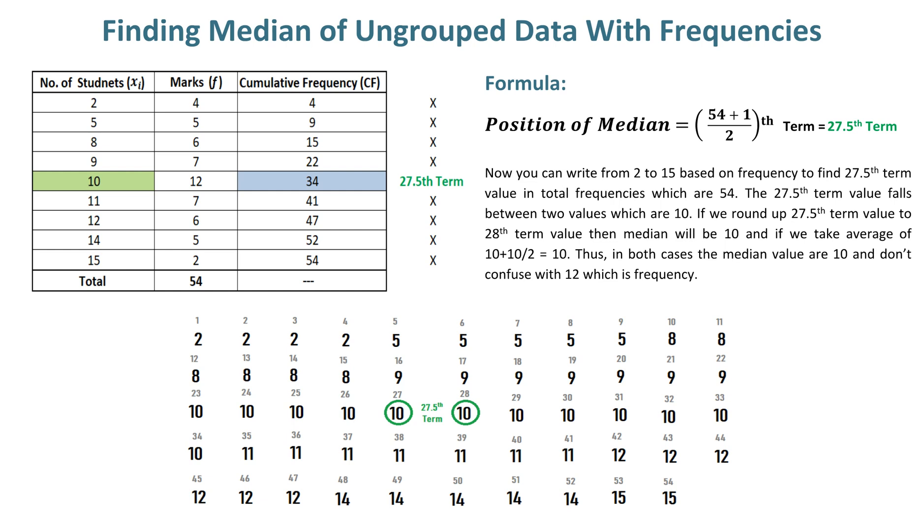If we take the average of both values circled in green, that also gives a median of 10. Thus, in both cases, the median value is 10—don't confuse it with 12, which is the frequency. This brief example of finding median in ungrouped data is just for understanding.